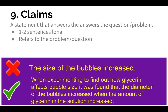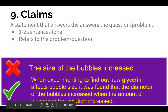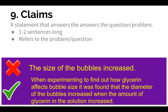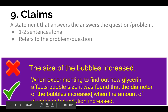A bad example of a claim would be: 'the size of the bubbles increased.' It doesn't give enough details and it's not actually comparing your independent and your dependent variables. Here's a better claim: 'When experimenting to find out how glycerin affects bubble size, it was found that the diameter of the bubbles increased when the amount of glycerin in the solution increased.' The first part summarizes the question as a statement, and then uses words like increase or decrease to explain what was happening to the variables.